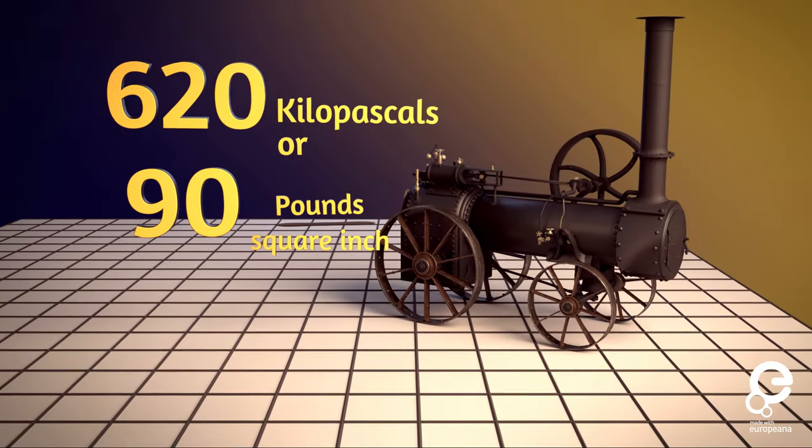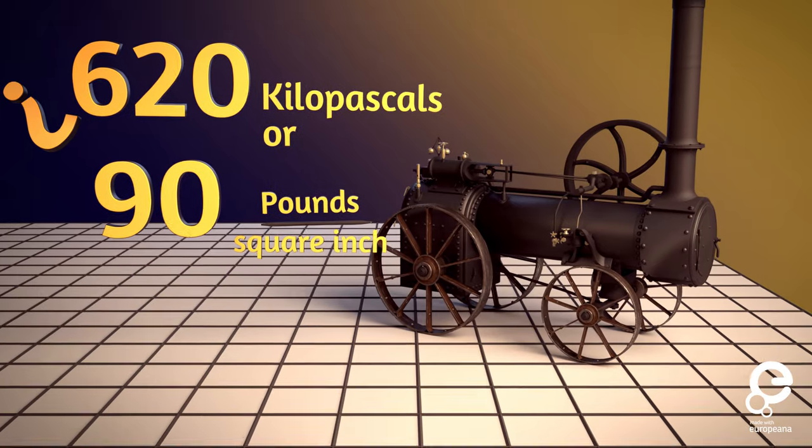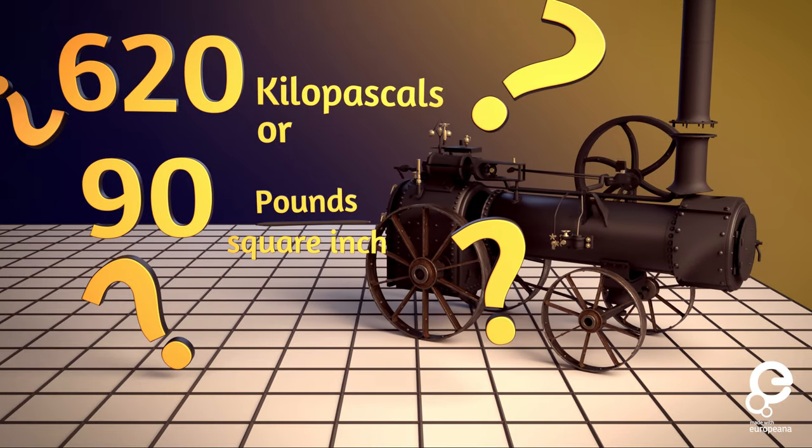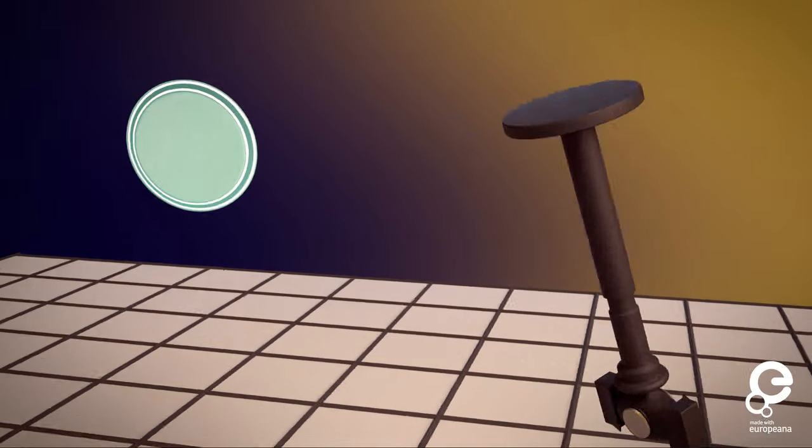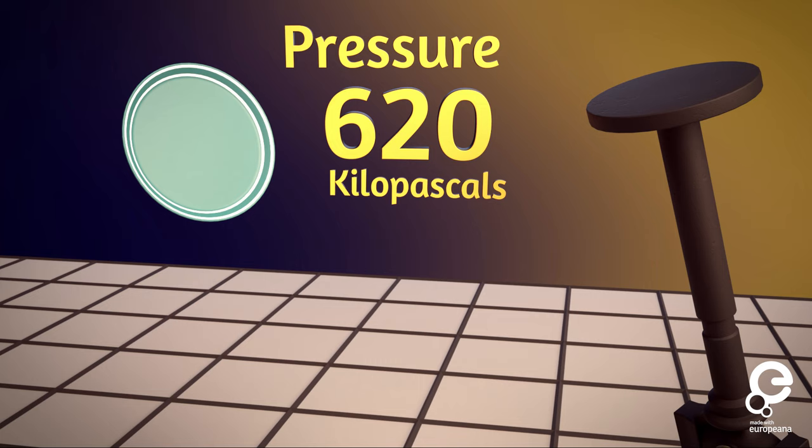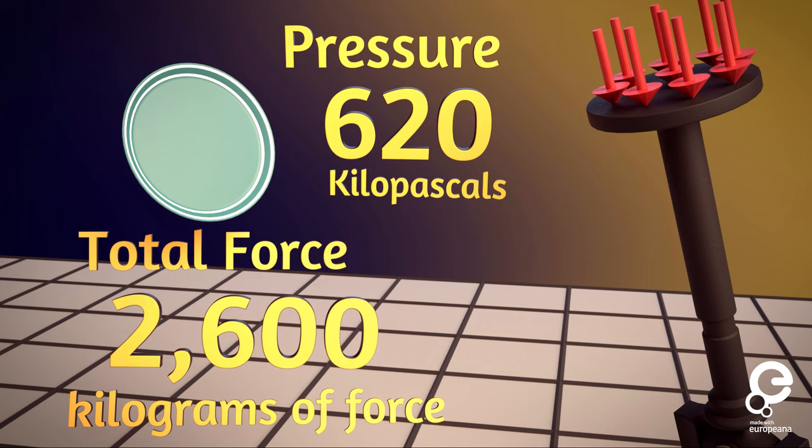But what does that number even mean? Well, for this traction engine, the piston's diameter is about the size of a dinner plate. So with a pressure of 620 kilopascals, the overall force from the steam on this plate-sized piston comes out to be 2,600 kilograms of force, or almost 3 tons.